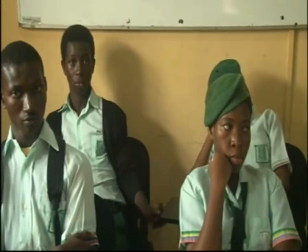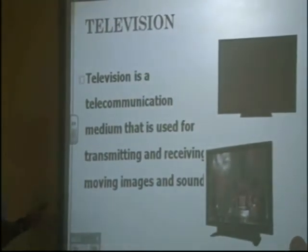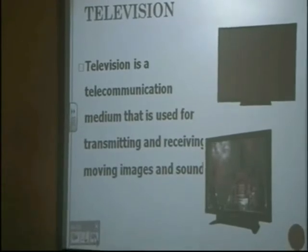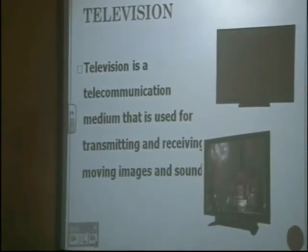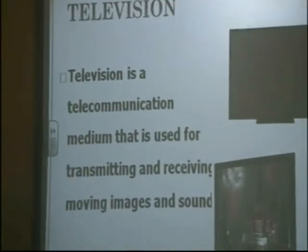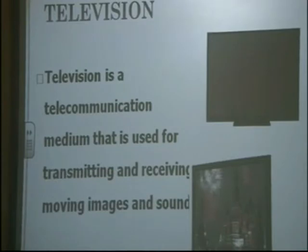A radio transmits audio signals — you can hear what is being said through the radio but you cannot see any pictures. That is why we said it transmits audio signals. The next is the television. The television is also a common household equipment. The television is a telecommunication medium that is used for transmitting and receiving moving images and sounds. Unlike the radio, where you may not see the person talking, with television you will see everything — the images, the sounds, and the pictures shown on the screen.